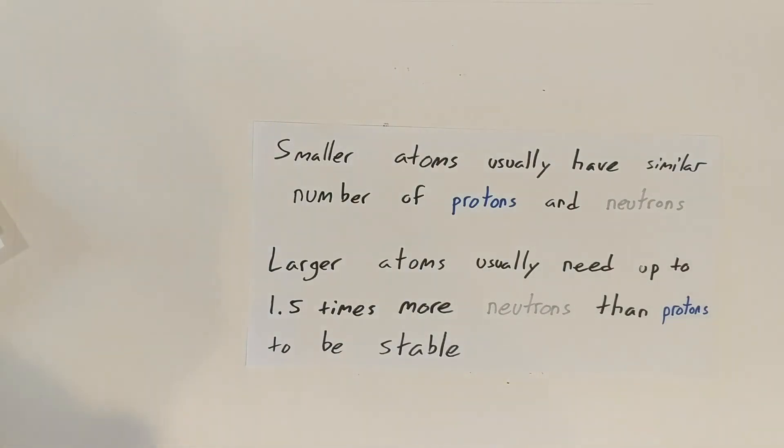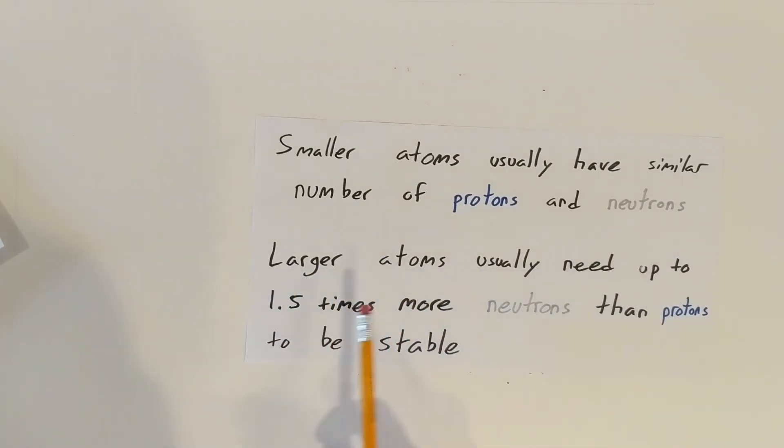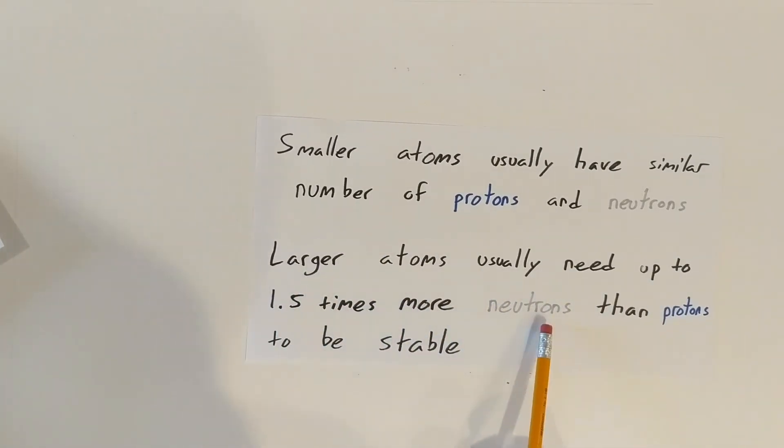And if we get larger and larger atoms, we're going to need, well, we'll just read this here. Larger atoms usually need up to 1.5 times more neutrons than protons to be stable. So if we get larger atoms like lead, which has 82 protons, we're going to need a significantly larger amount of neutrons to be able to hold all those protons together.